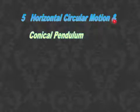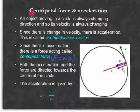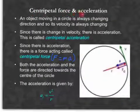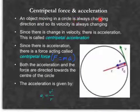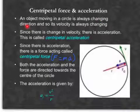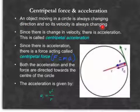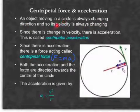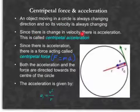Horizontal circular motion and conical pendulum. Centripetal force and centripetal acceleration. An object moving in a circle is always changing direction, and so its velocity is always changing because velocity has direction. Since there is a change in velocity, there must be acceleration. And this type of acceleration is called centripetal acceleration.